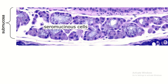The submucosa is formed by dense irregular connective tissue. 'Dense' means it contains more extracellular matrix but fewer cells. 'Irregular' means the extracellular matrix — including collagen fibers and elastic fibers — are arranged irregularly, and the cells are also arranged irregularly. This submucosa contains seromucous glands.